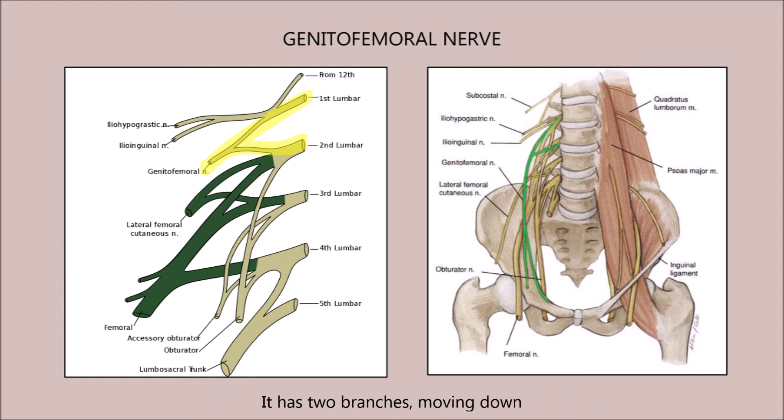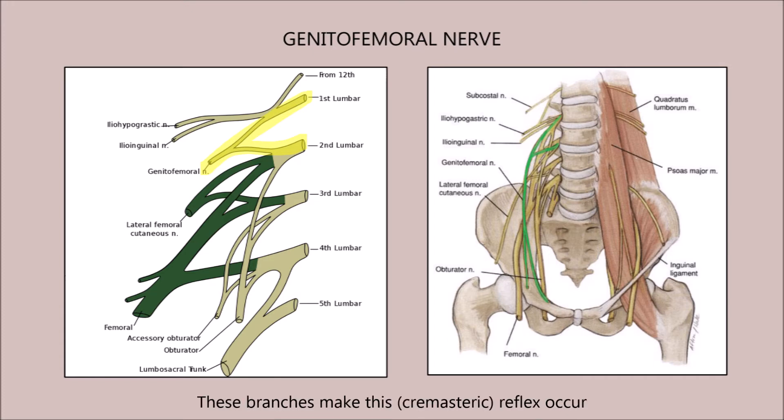It has two branches moving down — if you touch the medial thigh, the testes hide. These branches make the cremasteric reflex occur.